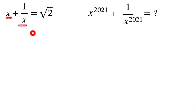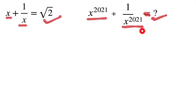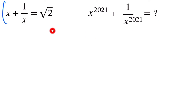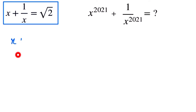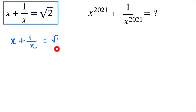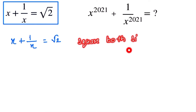So this is our question: x plus 1 by x is equal to √2. This is given. So we have to find the value of this expression. For finding the value, we first notice that x plus 1 by x is equal to √2. So now we square both sides.